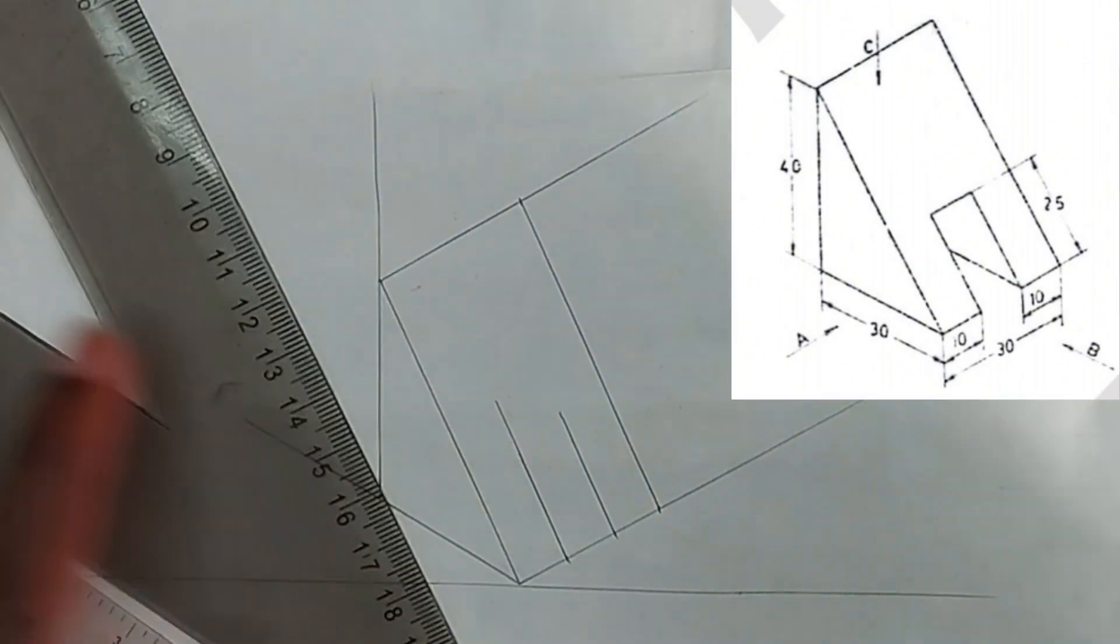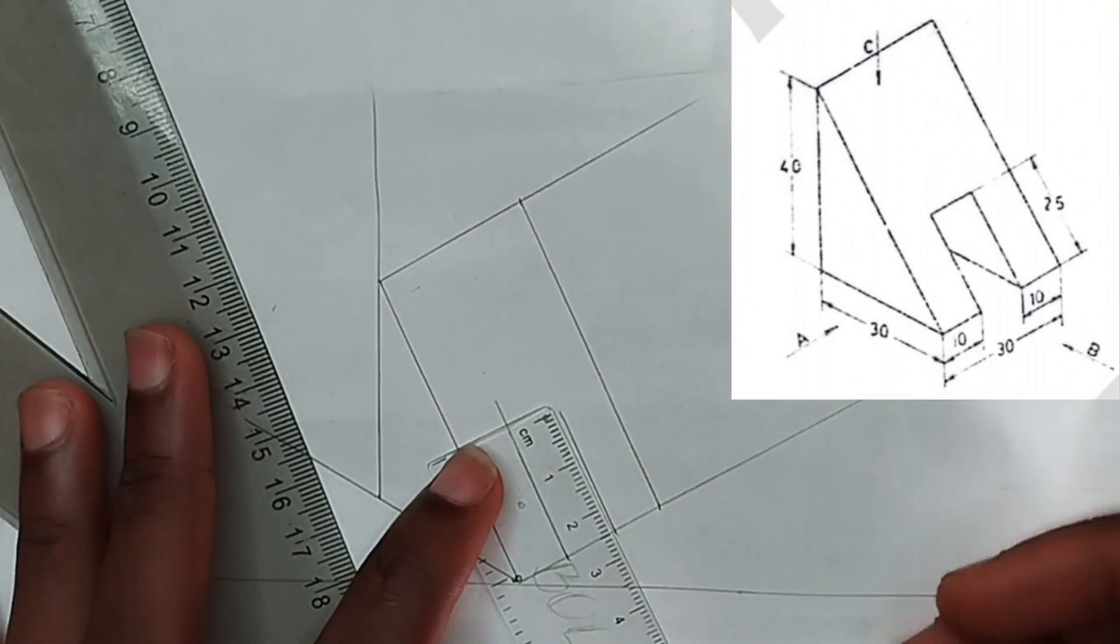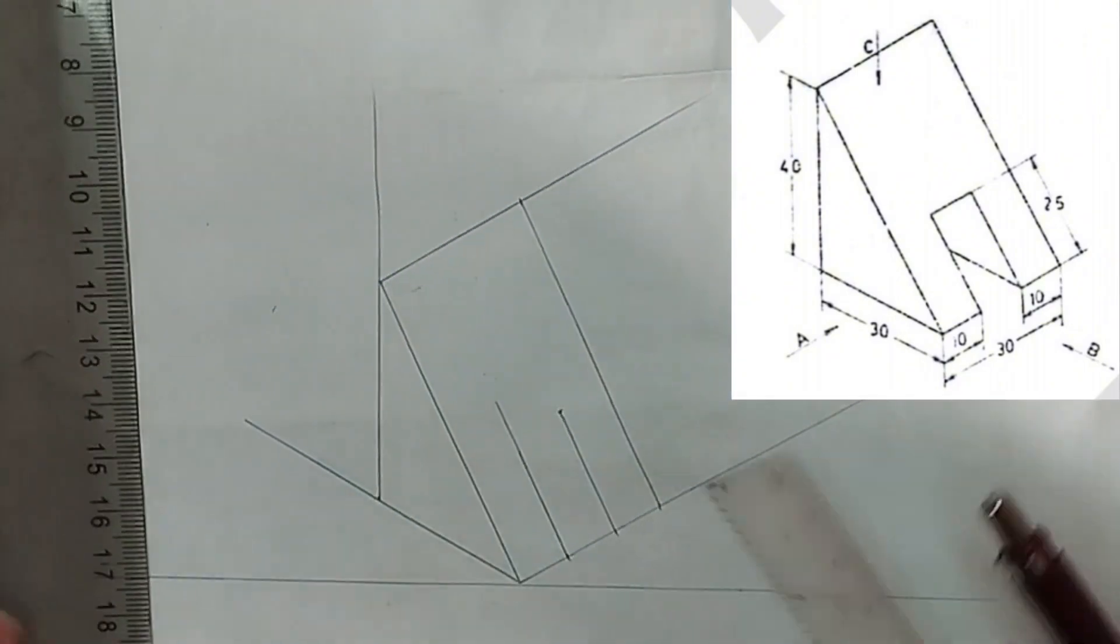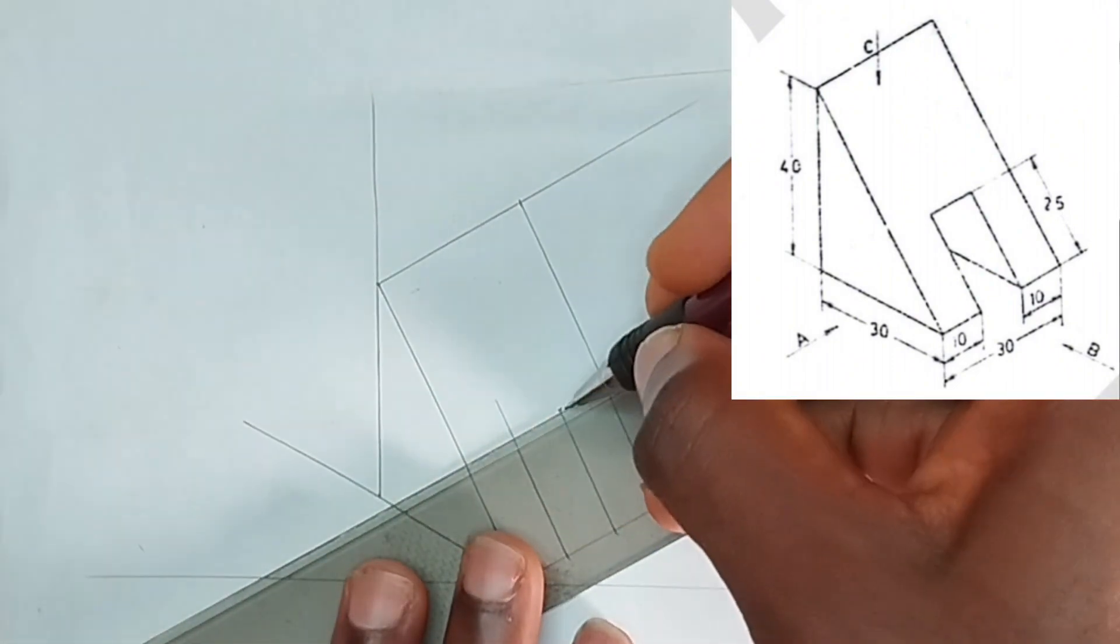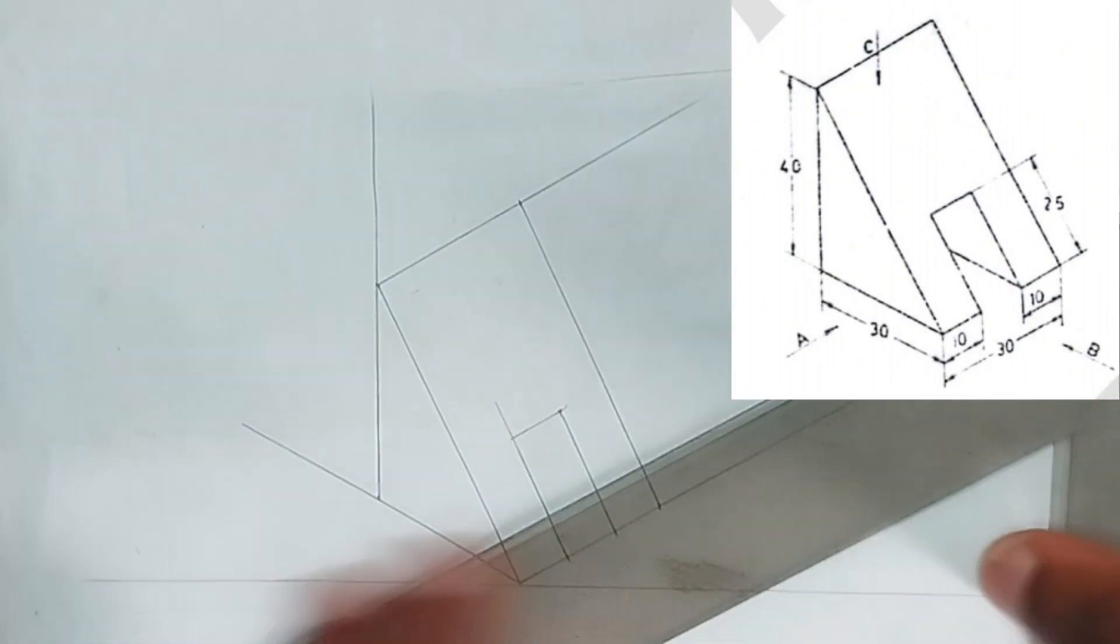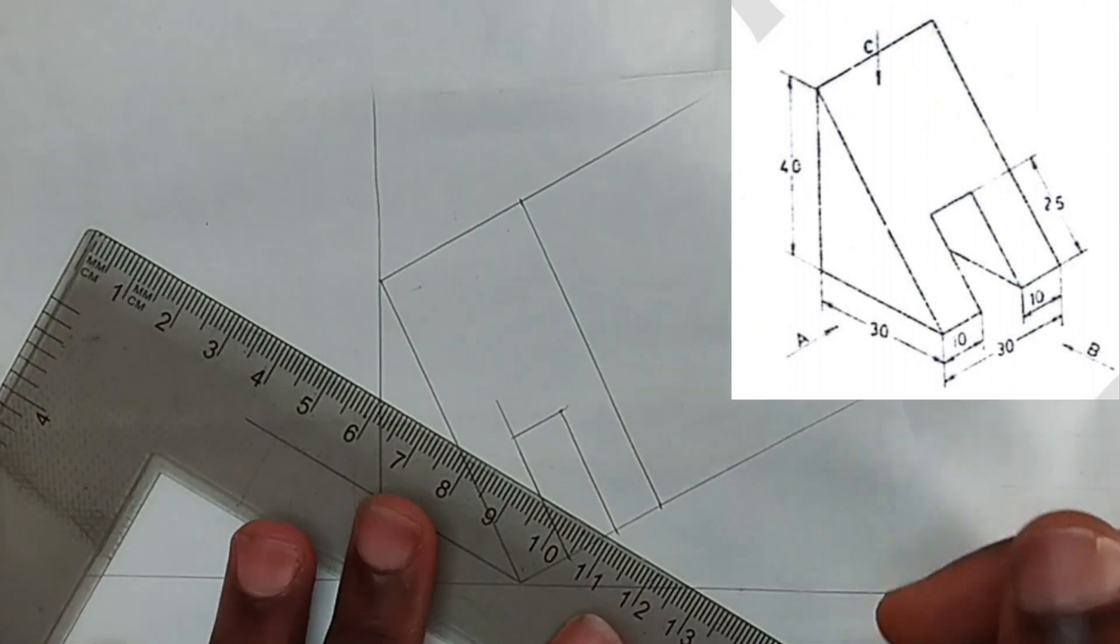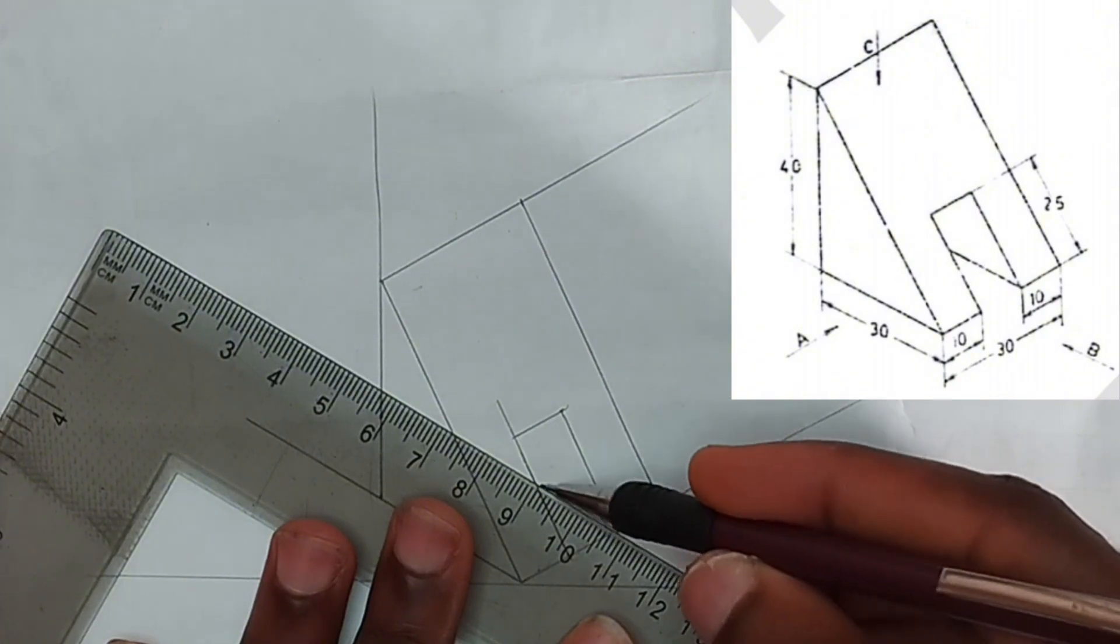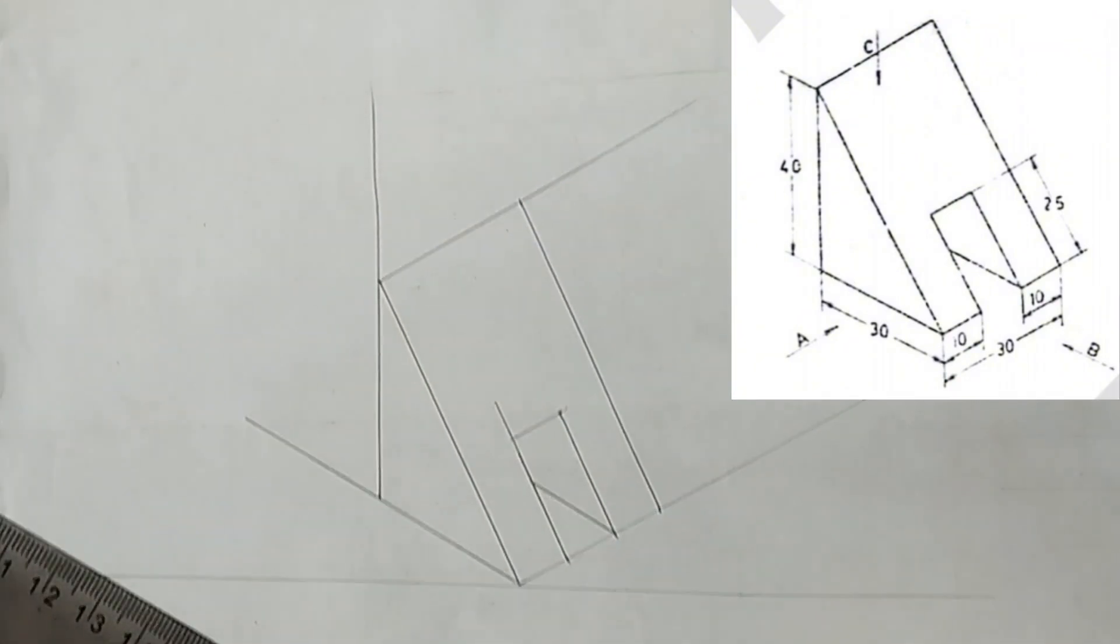So we are told this place is 25, 35 millimeter. So we pick our set square and join this place back like this. So with our square 30 degree we are going to draw a line in this place to show that there is an opening in that place.